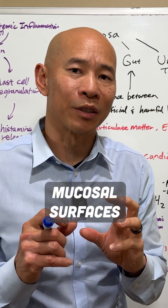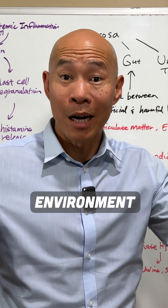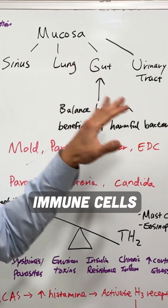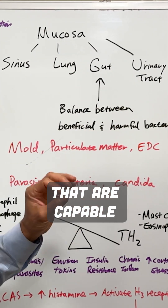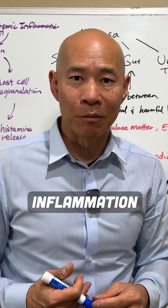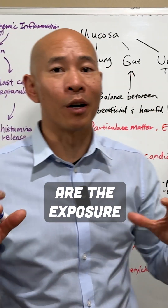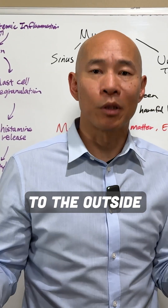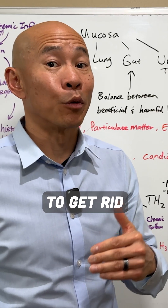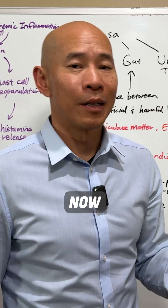Now, because these mucosal surfaces are exposed to the outer environment, they're lined with immune cells that are capable of inducing inflammation. Because these mucosal surfaces are the exposure to the outside world, they are able to trigger inflammation to help you get rid of potential pathogens and allergens.